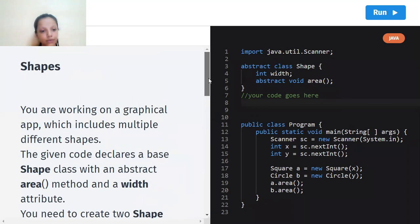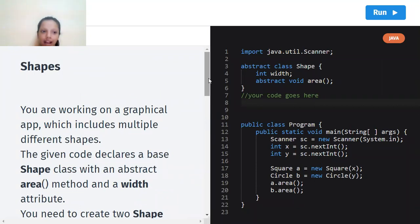We have to know the area of shapes. So yeah, three things which are given to us: the Shape class is a super class, the area method is an abstract method, and width is the attribute.